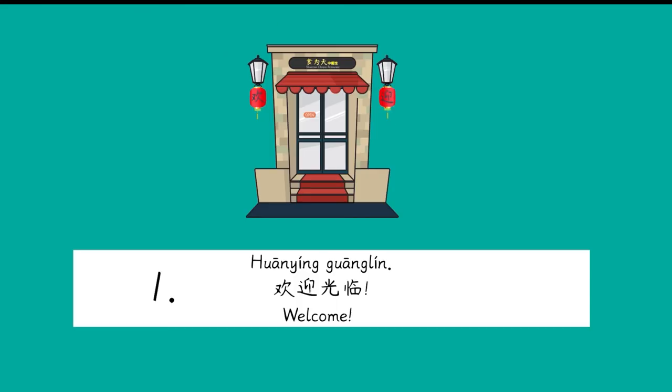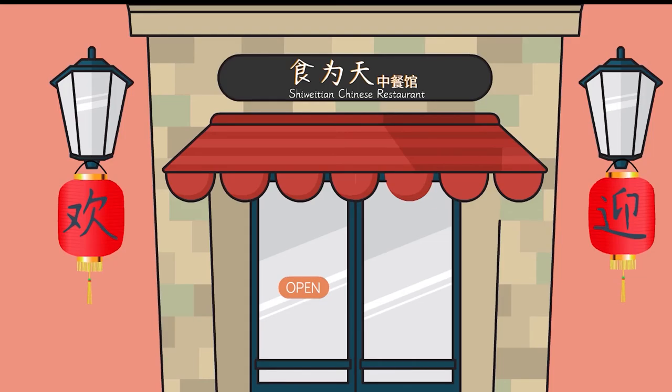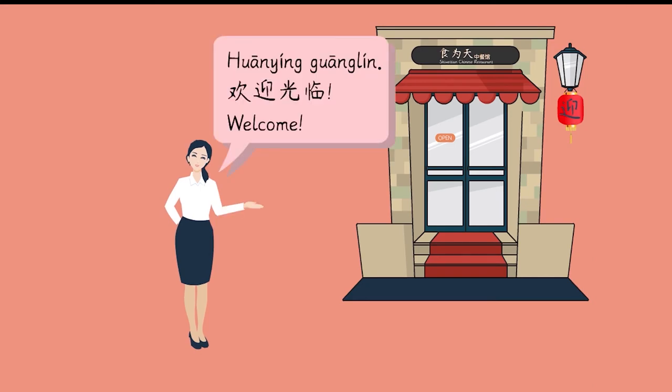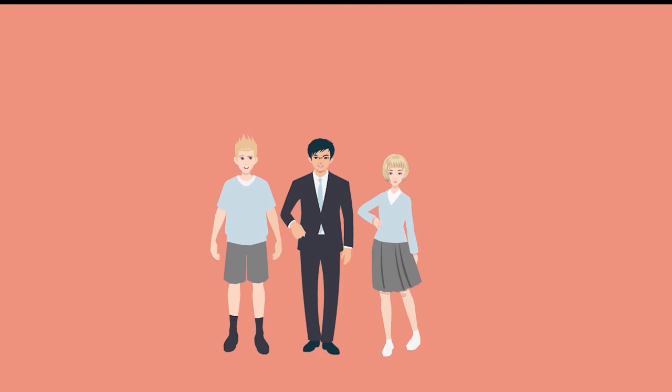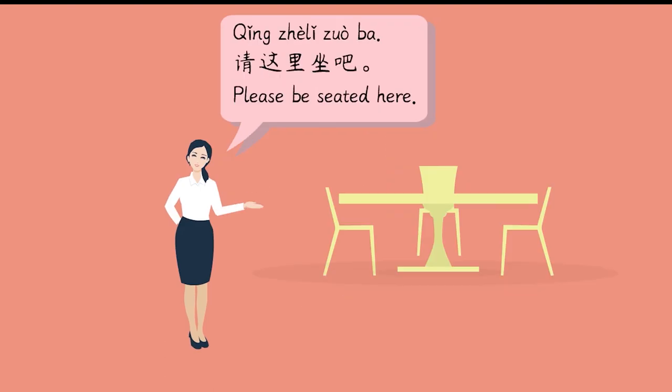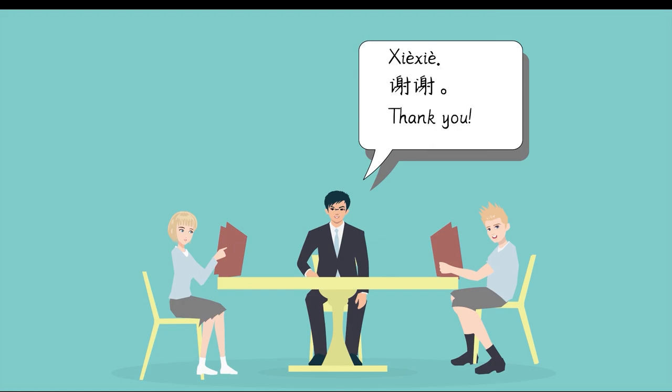对话一,欢迎光临。十位天中餐馆,我们到了。到了。您好,欢迎光临。请问你们几位? 三位。这边请,请这里坐吧。这是菜单。谢谢。